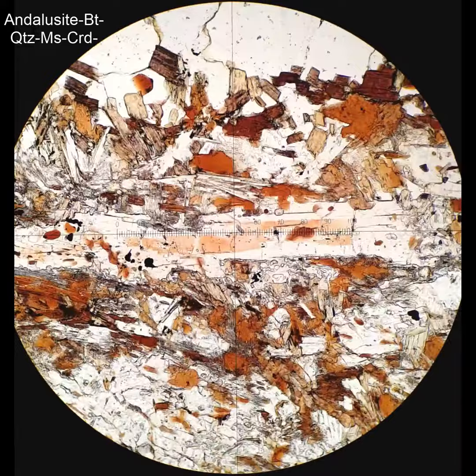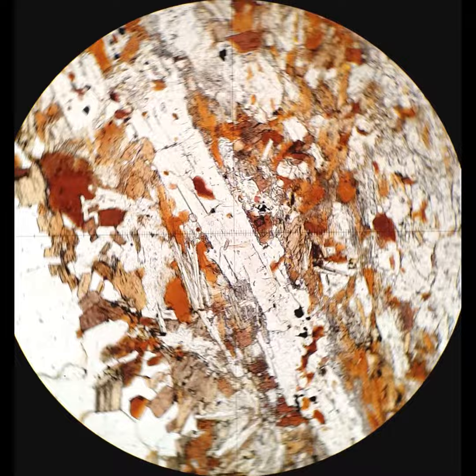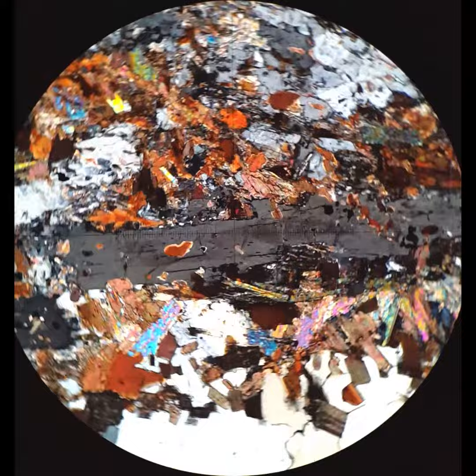An unusual characteristic of andalusite is that it can be pleochroic pink. Oftentimes it's only the cores that are pink and the rims are not. So what you're looking at here is an andalusite crystal with a pink pleochroic core and a non-pleochroic rim. Again, this is the long axis — it's in the plane of the thin section, and you can see it has very low interference colors.